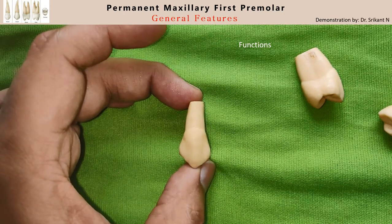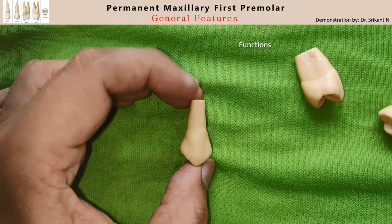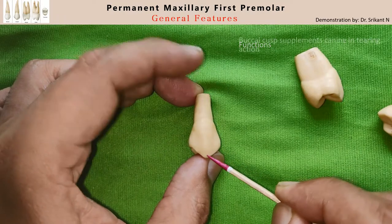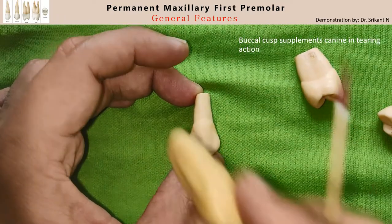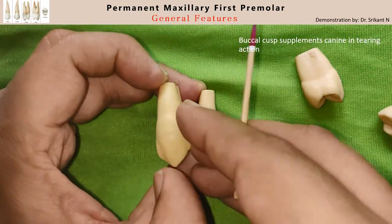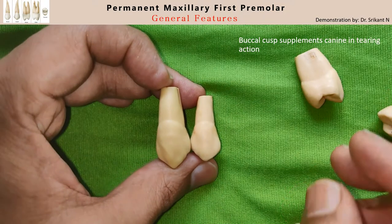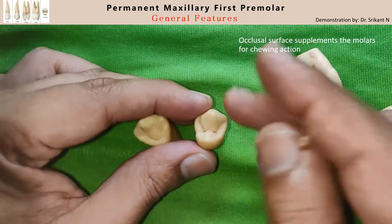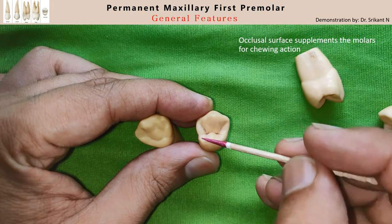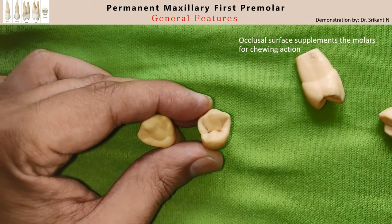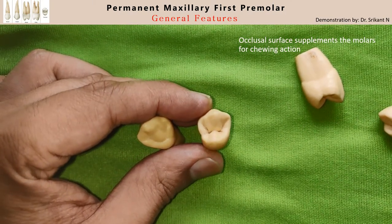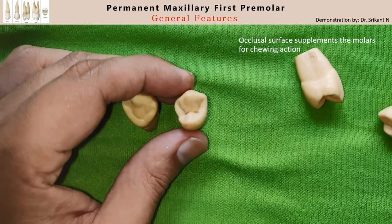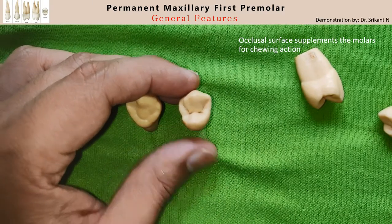Hence it is placed in between the anterior and the posterior teeth — that is why it is called the premolar, coming before the molars. The buccal cusp functions similar to a canine in shearing and tearing activity, and the lingual cusp with the wider occlusal surface area also supports the masticatory process.